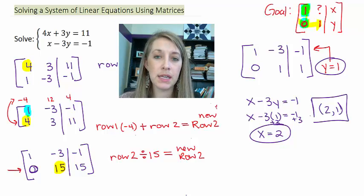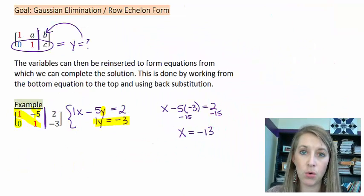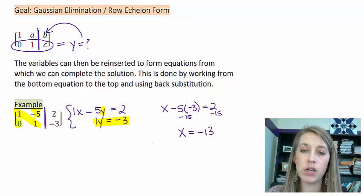So this is an example of using what we call either Gaussian elimination or row echelon form. In the next video, I'm going to basically be doing the same thing, but I'm going to take it one more step. And, of course, we're going to be working through more examples.